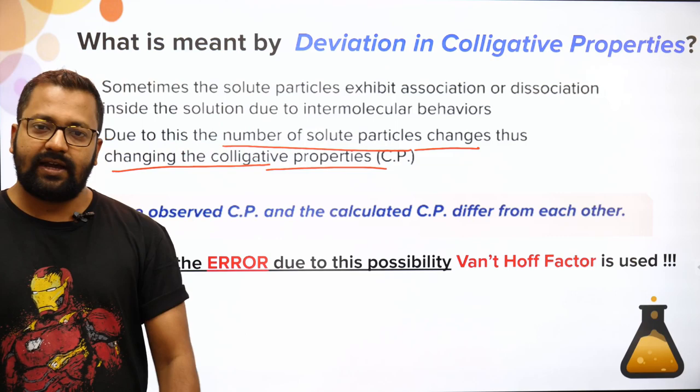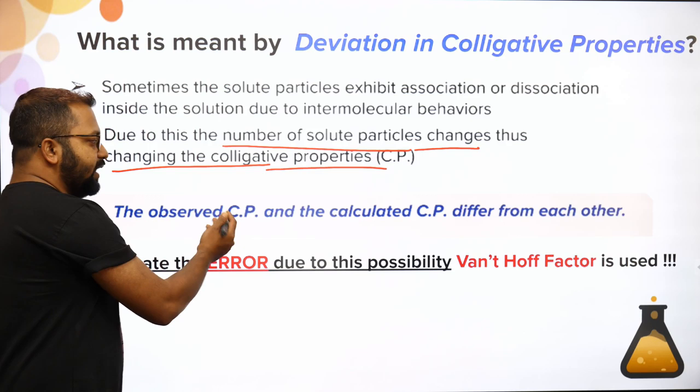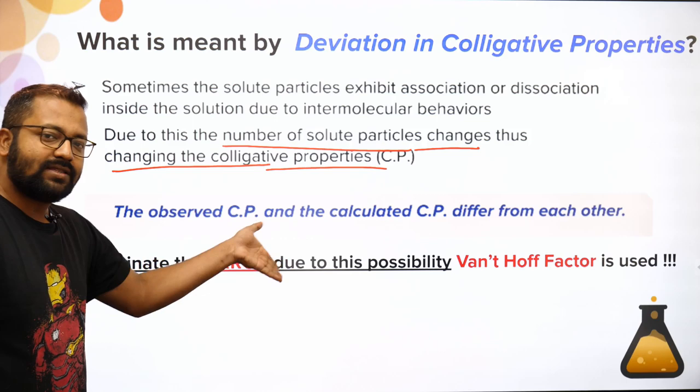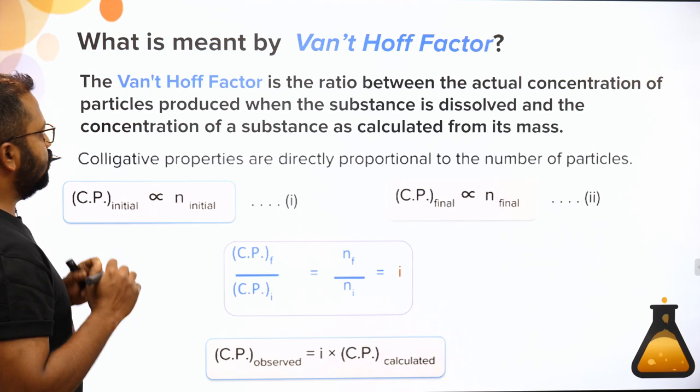Since there is a difference between observed and calculated colligative properties, we introduce something known as the Vant Hoff factor to make sense of that difference and eliminate the error. The observed colligative property and the calculated value are different from each other, and the Vant Hoff factor accounts for this.